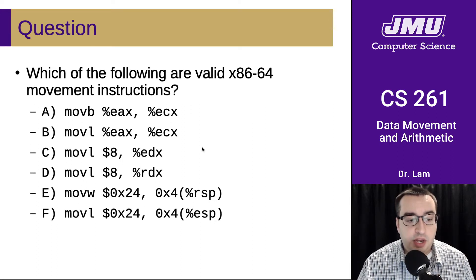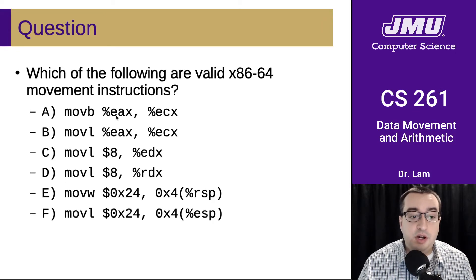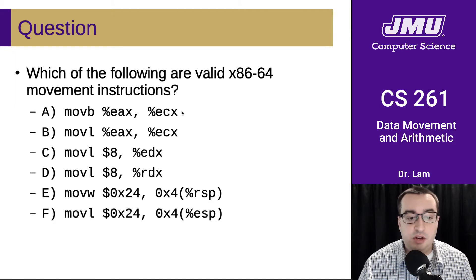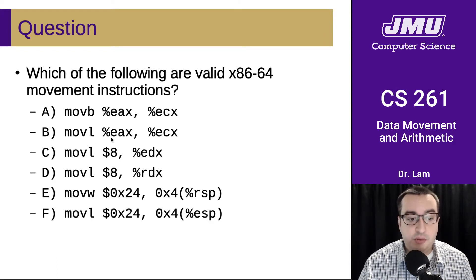Looking at the first one, we have a byte-size move from EAX to ECX. This is invalid because we're doing a byte-size move, which is 8 bits, but we're using 32-bit registers. So that is invalid because the register operands do not match the instruction suffix. The second one is a 32-bit move from a 32-bit register to a 32-bit register — that one's valid.